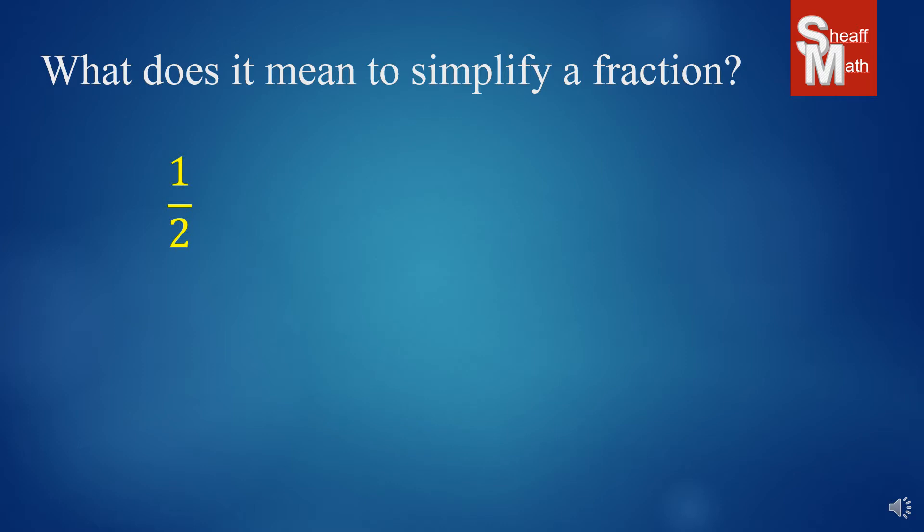We have this fraction one-half, and if I give you this figure right here, we have a circle here, and it's cut into two equal pieces, and one of those pieces is shaded. And so out of the two equal parts, there is one shaded, and so that is how we represent it by one over two, one-half.